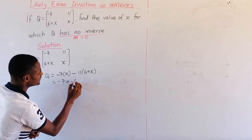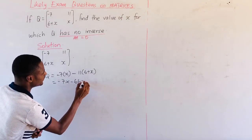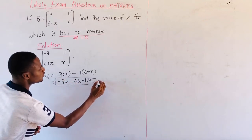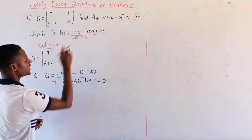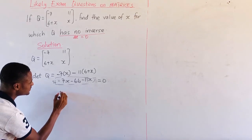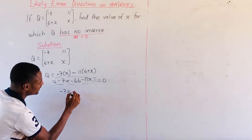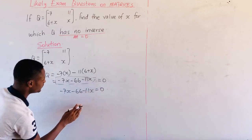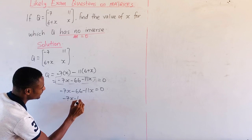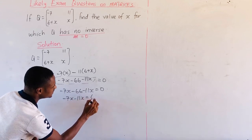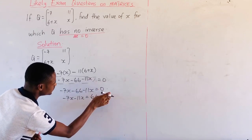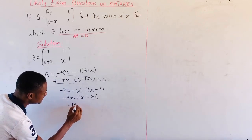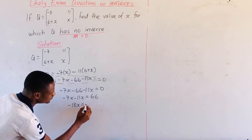This gives us negative 66 minus 11x. Since the matrix has no inverse, the determinant is equal to 0. So we have negative 7x minus 66 minus 11x equals 0. Grouping like terms, 66 crosses to the other side and becomes positive. Then we have negative 18x equals 66.